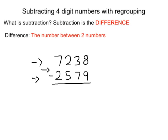So, as we begin over here, we have 7,238 minus 2,579. Now, as I said, we're going to be doing this with regrouping. Once again, you start from right to left, just the same thing as addition.